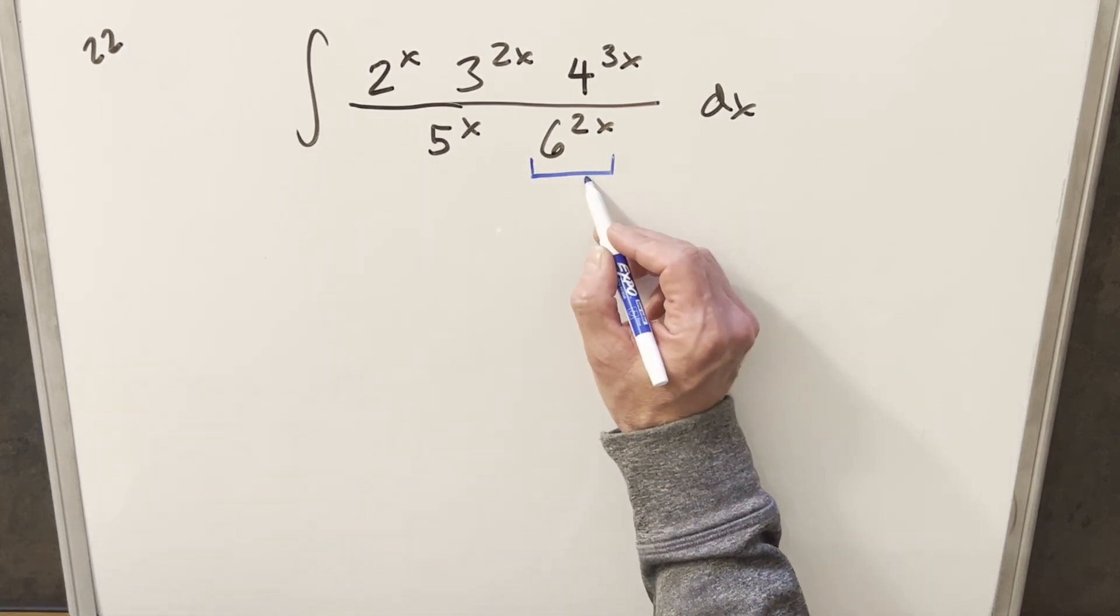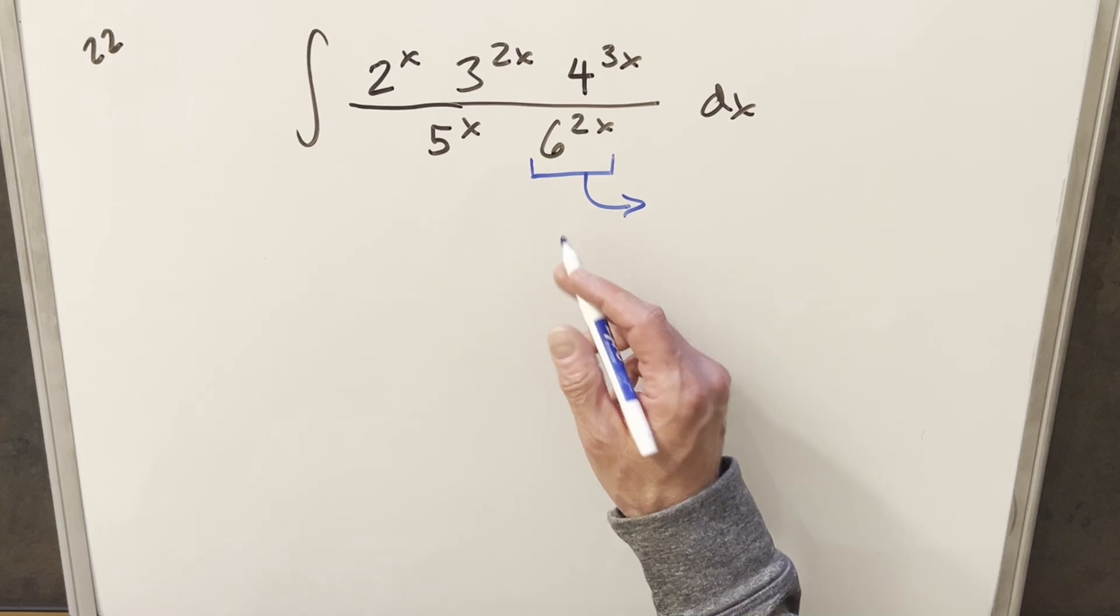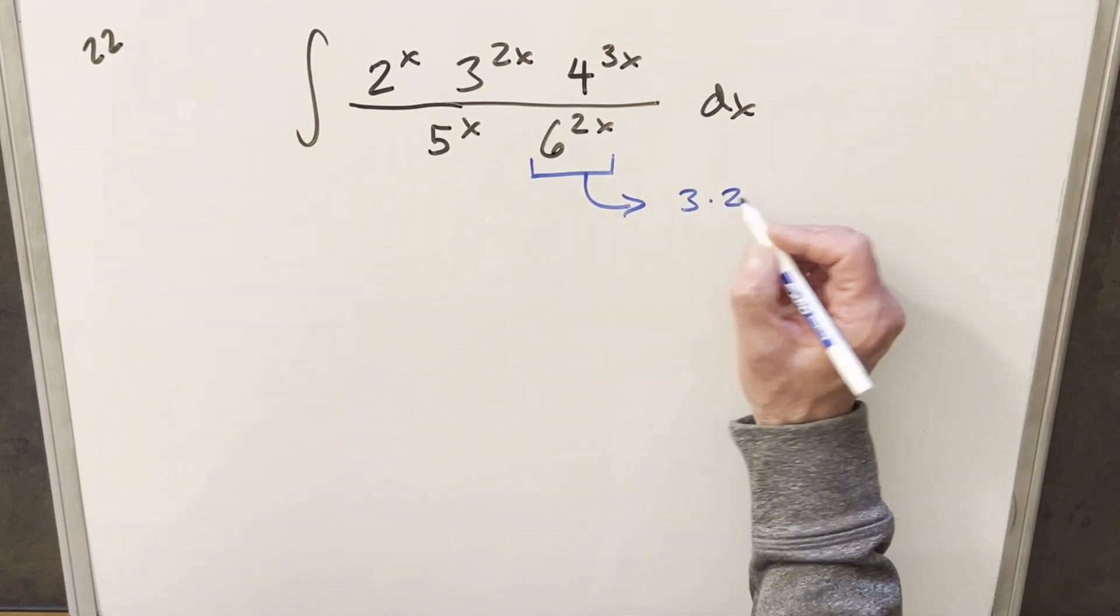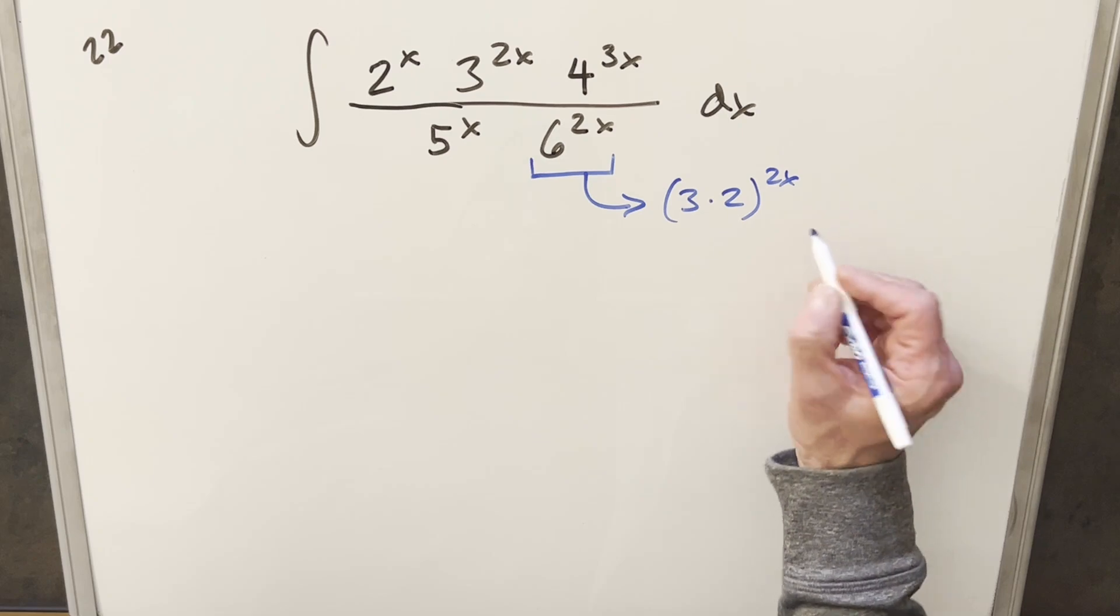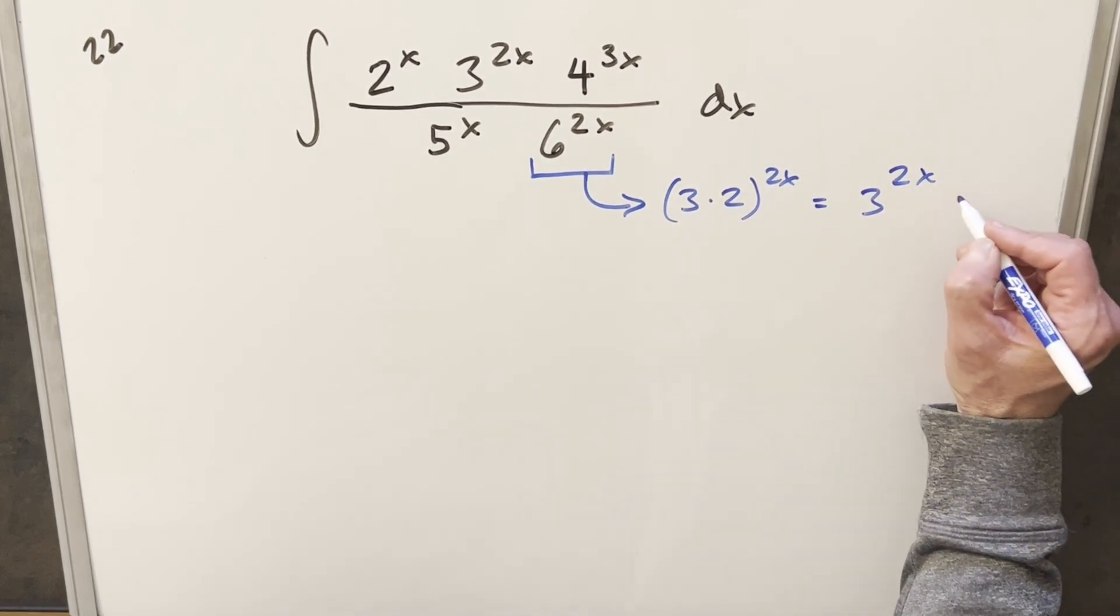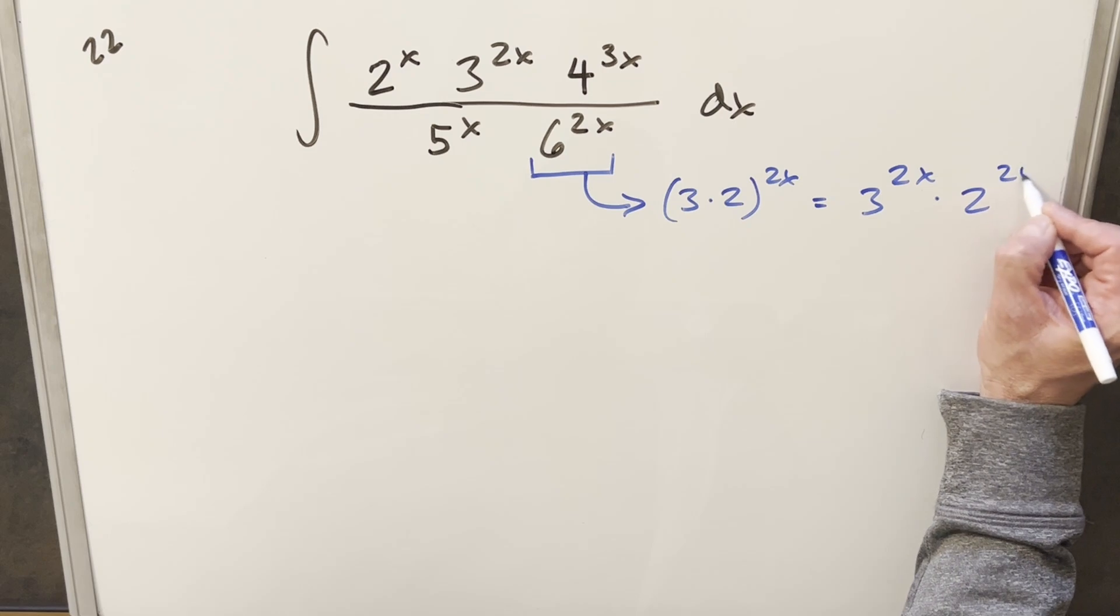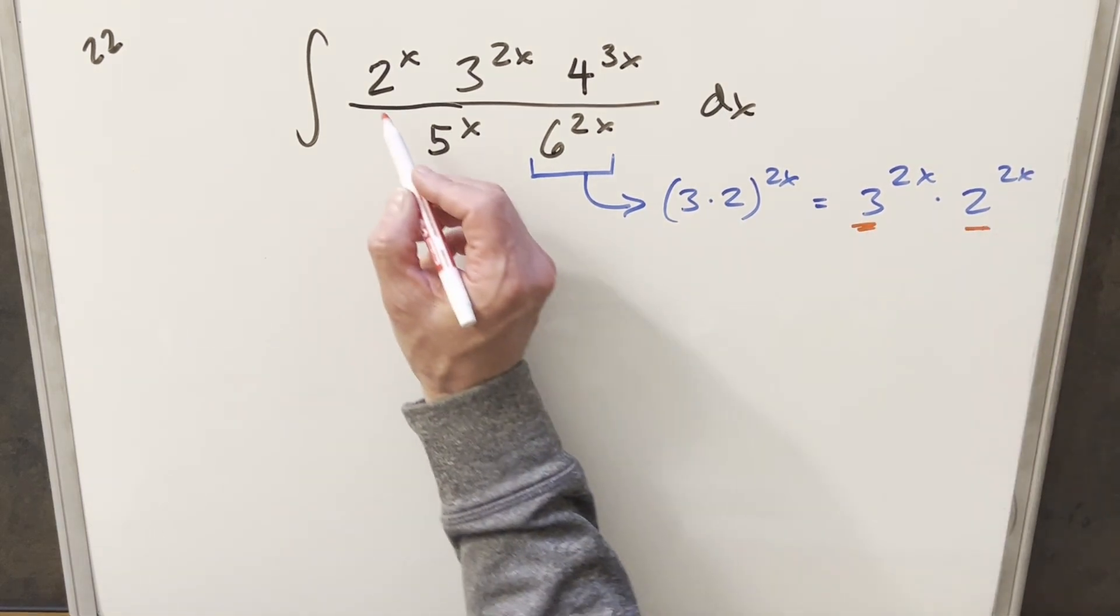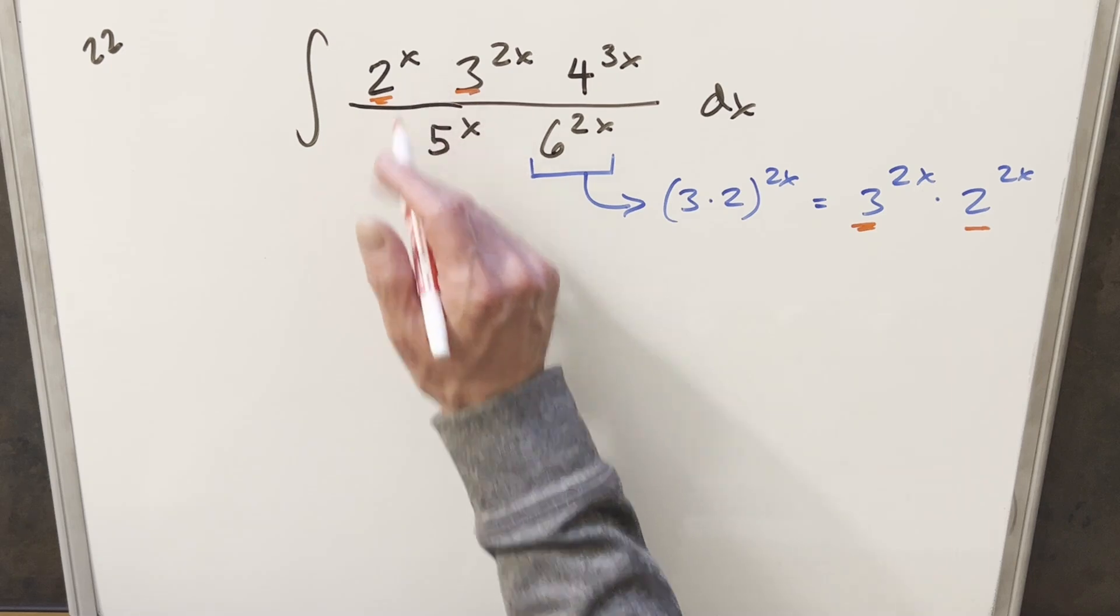Let's just look at 6 to the 2x. I can take this over here and rewrite this. For 6 to the 2x, I can write this as 3 times 2 to the 2x. And then we can split this up and write it as 3 to the 2x times 2 to the 2x. And I think it's going to help us having the base of 3 and 2 because we've got things with the base of 3 and 2 in the numerator.